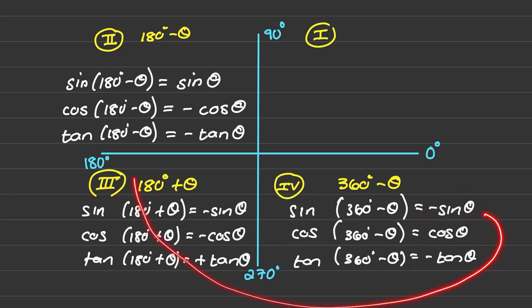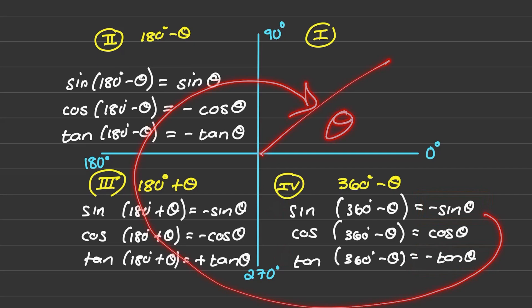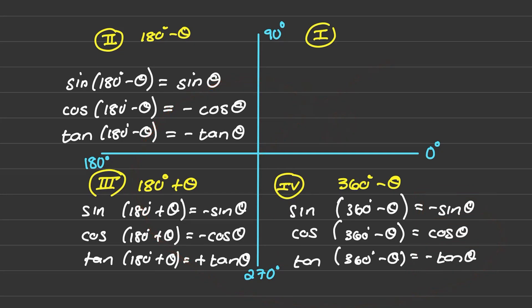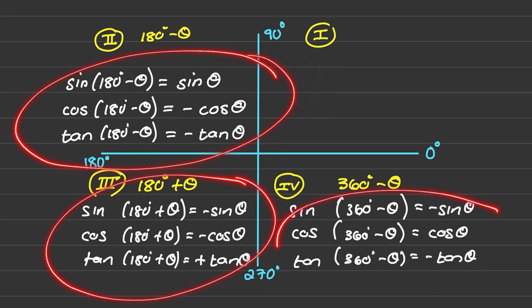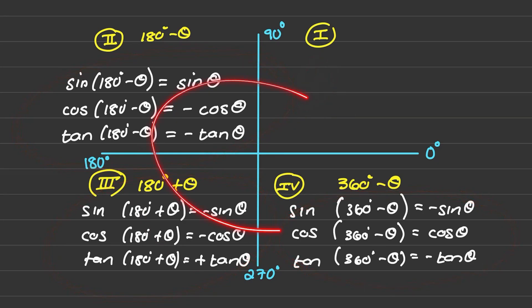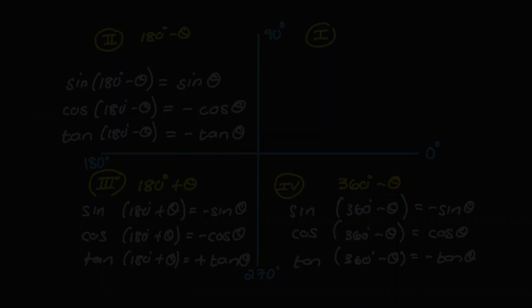This will help reduce all of these angles to an angle size fitting in the first quadrant. In one of our other videos I'll show you examples of how to apply these reduction formulas to rewrite any trig ratio.